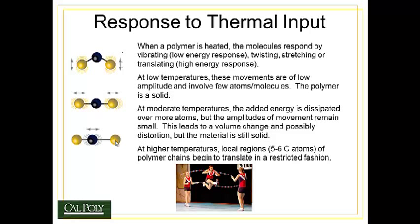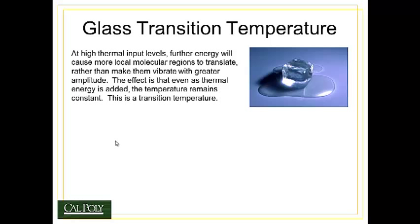At higher temperatures we begin to see something more important happening. In this case we see local regions of the polymer chains beginning to move relative to one another in a somewhat restricted fashion. Typically when we say local regions we're talking about something on the order of five to six carbon atoms moving. This temperature at which this transition occurs between the local vibrations and the more local translations or movement of molecules is called the glass transition temperature.